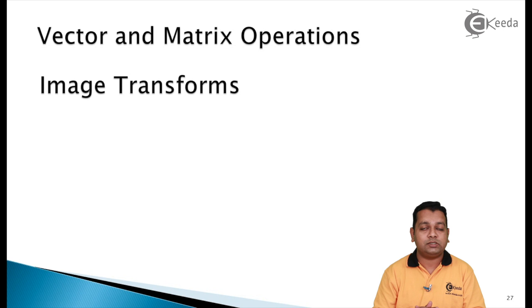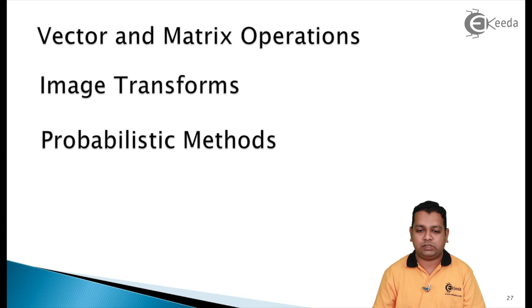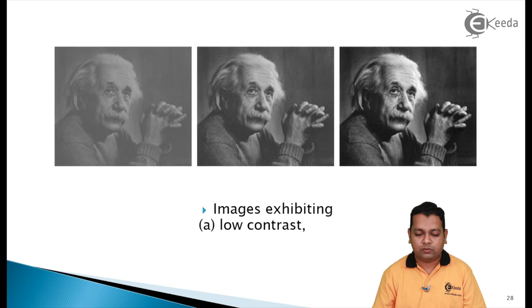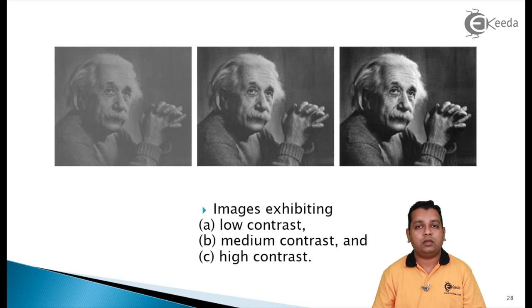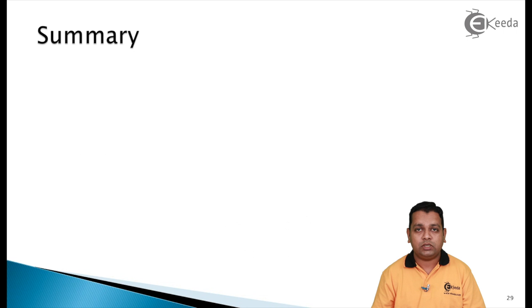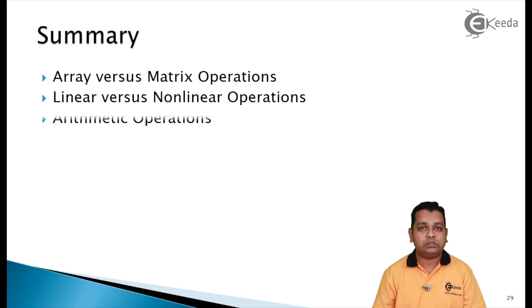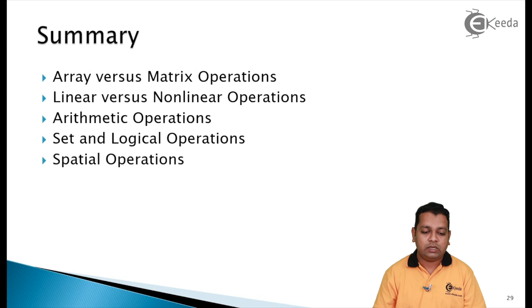The last mathematical tool is probabilistic methods, which work on image samples to give proper output by predicting things associated with particular cases. An example shows an image exhibiting low contrast, medium contrast, and high contrast — these can be achieved by having various mathematical tools work on the image samples. In summary, we have addressed: array versus matrix operations, linear versus non-linear operations, arithmetic operations of four types, set and logical operations, spatial operations, vector and matrix operations, image transforms, and probabilistic methods.